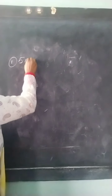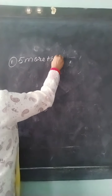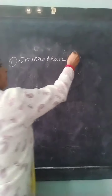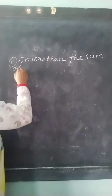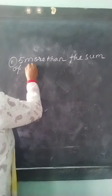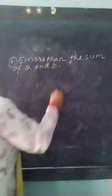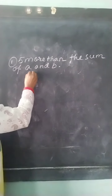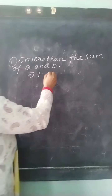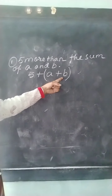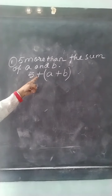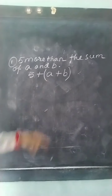Suppose I give you a sum like: 5 more than the sum of A and B. How will you express this? 5 more than means 5 plus the sum of A and B, which is A plus B. You may or may not use brackets. The sum of A and B means A plus B, and 5 more than that means 5 plus A plus B. This is how you will solve the sums.